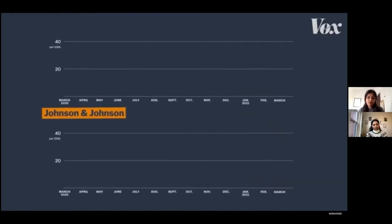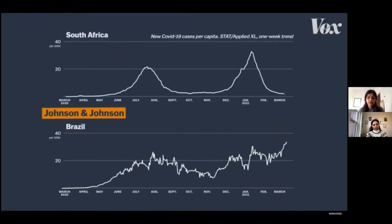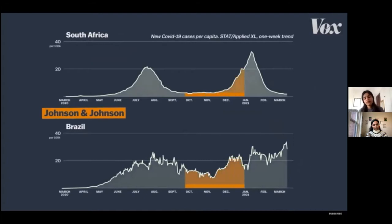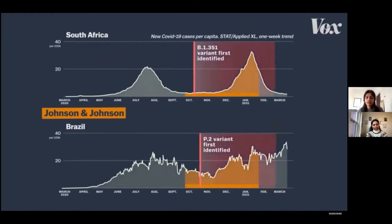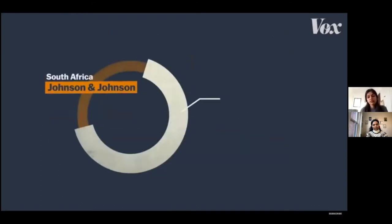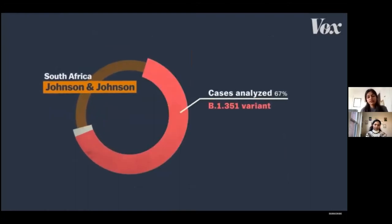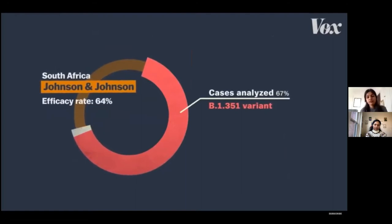Most of Johnson & Johnson's trial took place in other countries — primarily South Africa and Brazil — where not only were case rates high, but the virus itself was different. The trials took place as variants of COVID-19 emerged and became dominant in these countries. In South Africa, most of the cases in the Johnson & Johnson trial were the variant, not the original strain that was in the US over the summer. And despite that, it still significantly reduced infections.